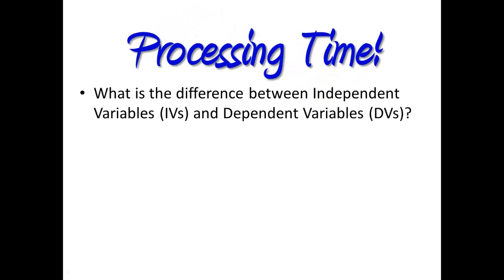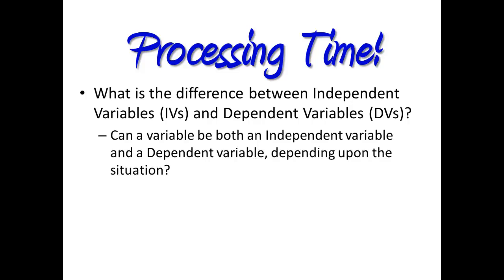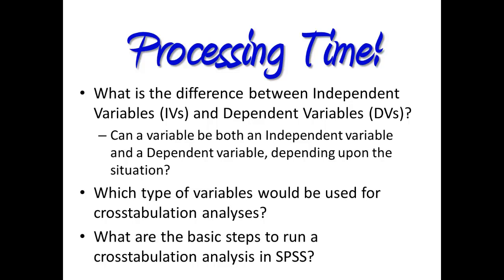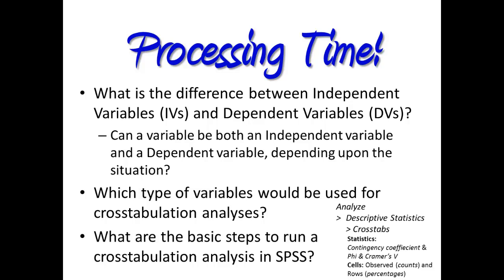Processing time: What is the difference between independent variables and dependent variables? Can a variable be both an independent and a dependent variable depending on the situation? Which types of variables are used for cross-tabulation analysis? And can you recall the basic steps for running a cross-tabulation in SPSS? That is: Analyze, Descriptive Statistics, Cross-tabs — and then under Statistics choose contingency coefficient and phi and Cramer's V, and under Cells choose observed counts and row percentages. You ought to be able to run a cross-tabulation analysis with very little effort at this point.